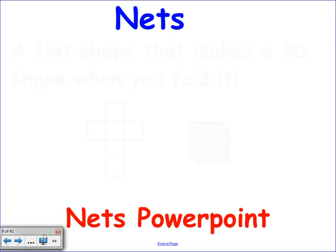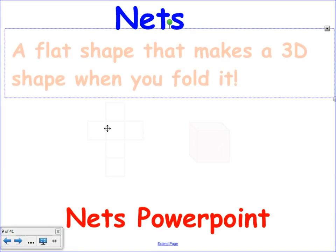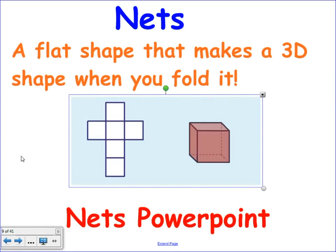Two nets. So what did we say a net was? A shape opened up. A flat shape that makes a 3D shape when folded, or a 3D shape that's flattened out either way around. So you've got something that when you fold those lines and put it together, it makes that.